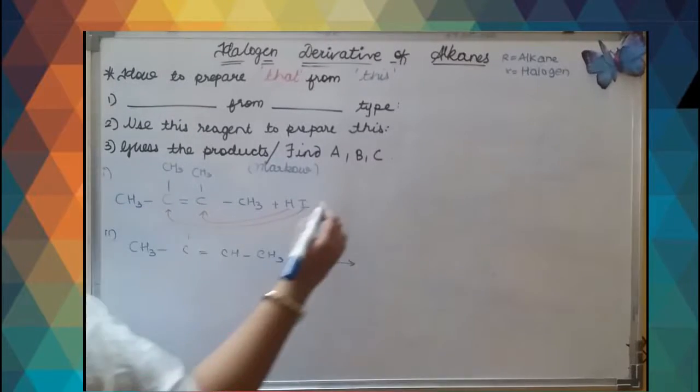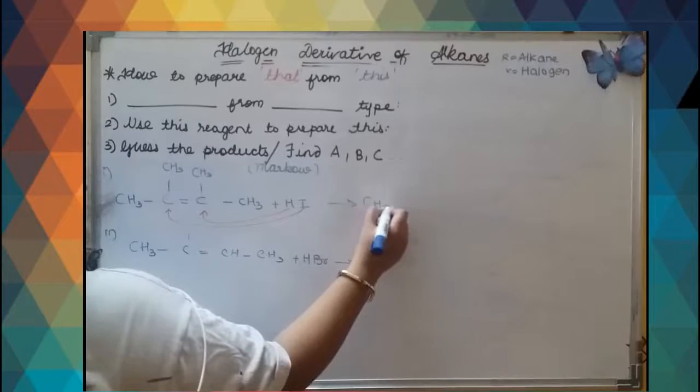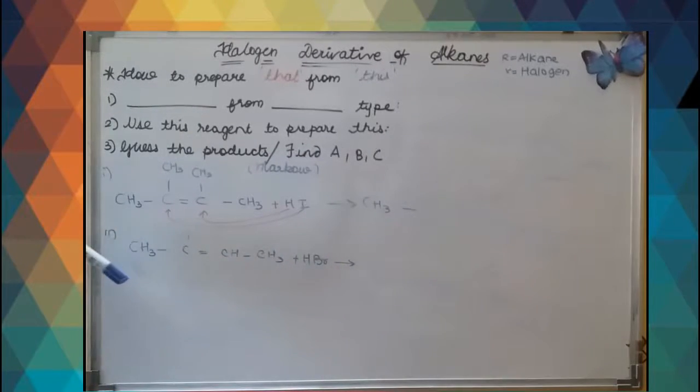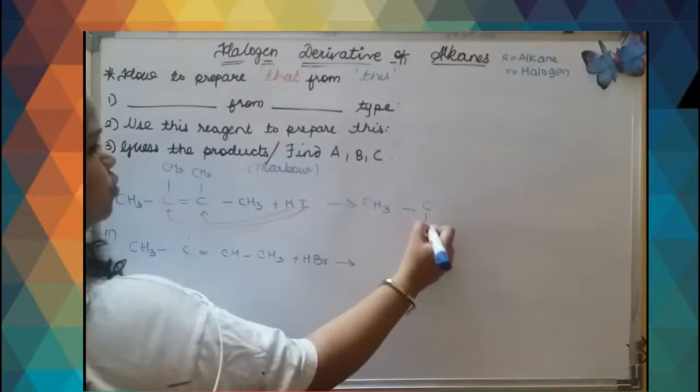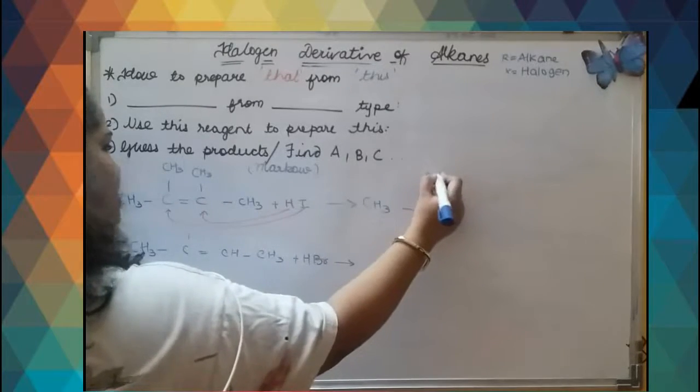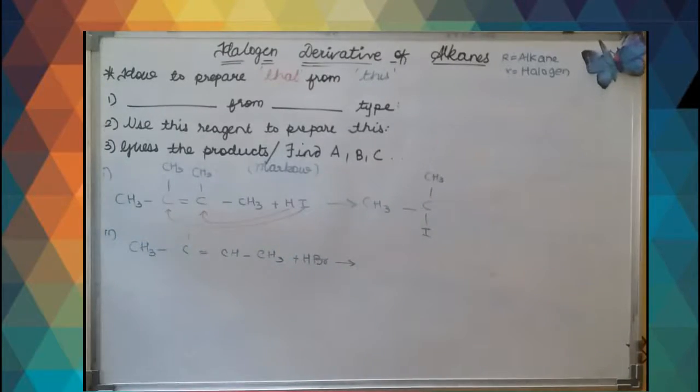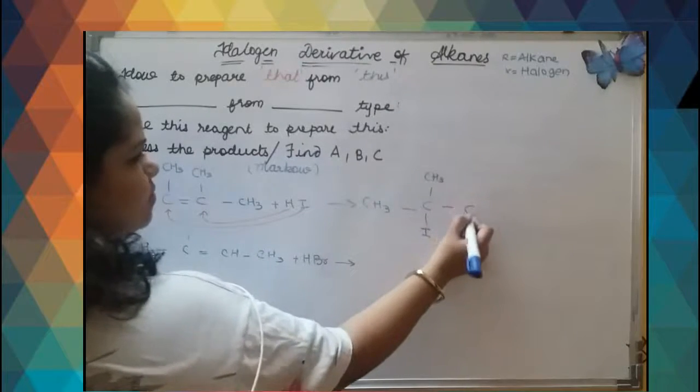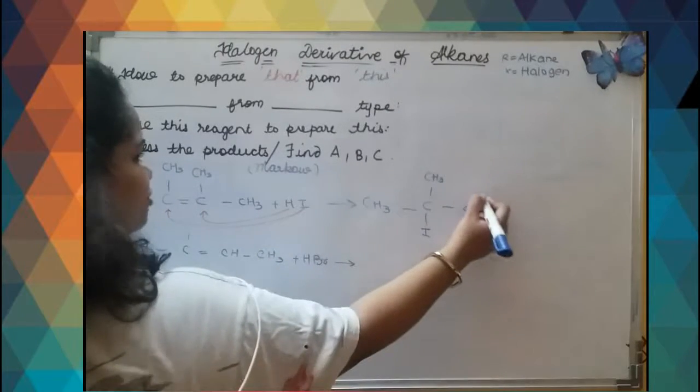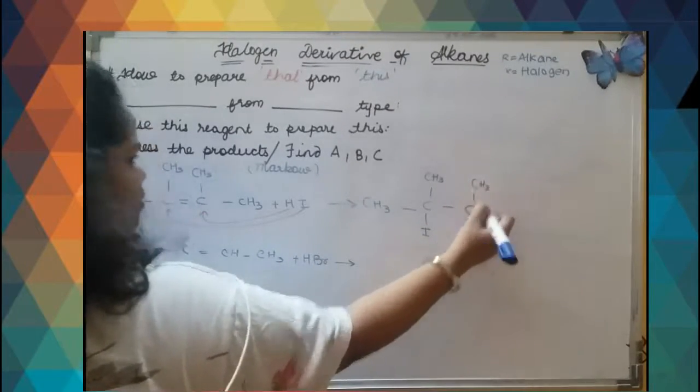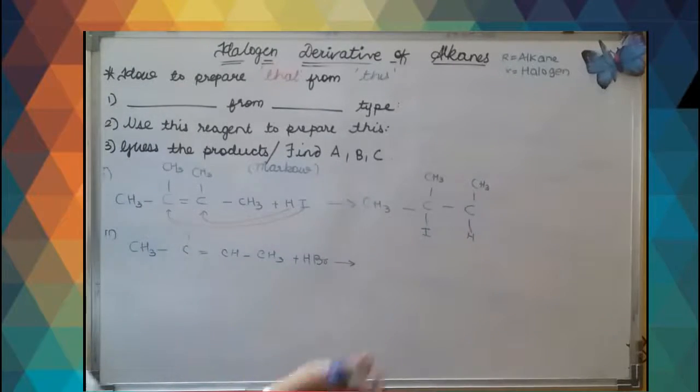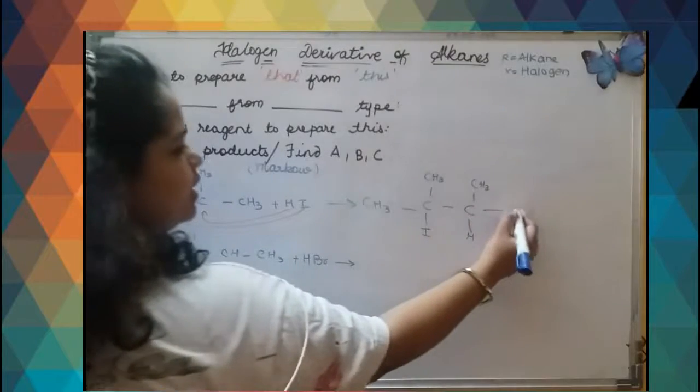What we will get in our answer is CH3 as it is, then C to which we are attaching I and CH3, then again H getting attached here and CH3. You can write it as CH together, whatever suits you, and again CH3.